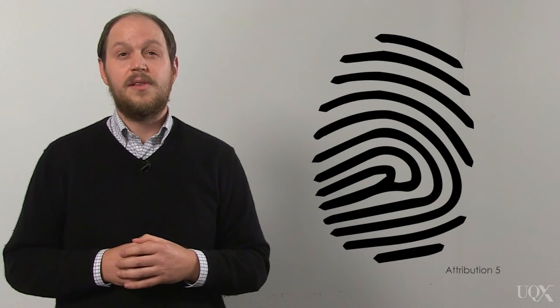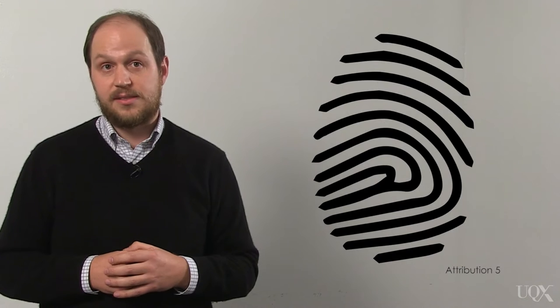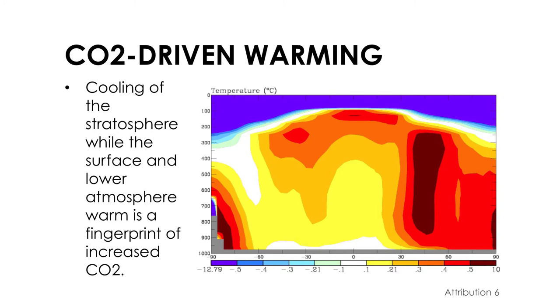But we can be even more confident, because greenhouse warming will leave different fingerprints on the climate than other possible causes. We've known for many decades that increasing levels of CO2 in the atmosphere will produce a unique pattern of temperature change from the surface to the upper atmosphere. The surface and lower atmosphere will warm, while the upper atmosphere will cool.